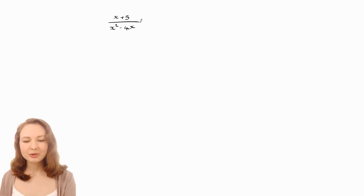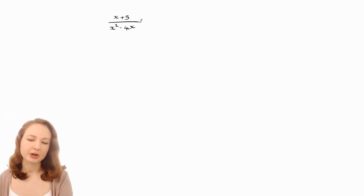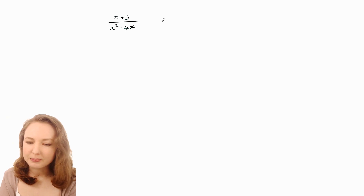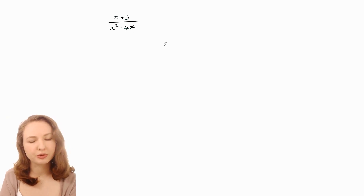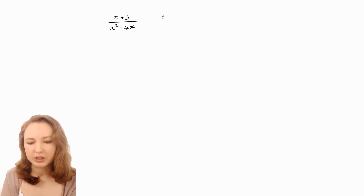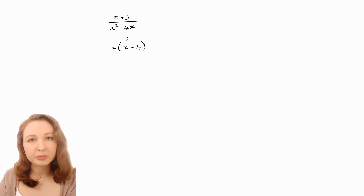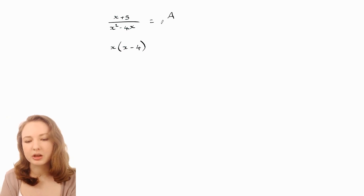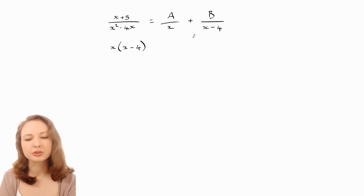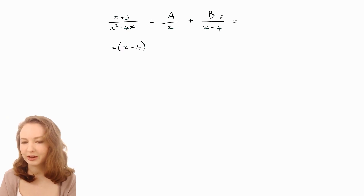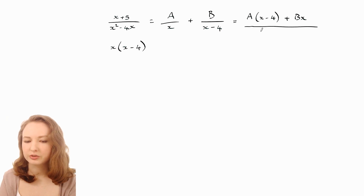Let's go through another example. Say we want to integrate (x+5) over (x²−4x). Integration isn't the only reason you'd want partial fractions but it is one of the main ones. First, factorize the denominator: x²−4x becomes x(x−4), taking out the common factor of x. That means we can represent this as A over x plus B over (x−4). Adding those with a common denominator, we multiply the first by (x−4) and the second by x, giving A(x−4) + Bx over x(x−4).